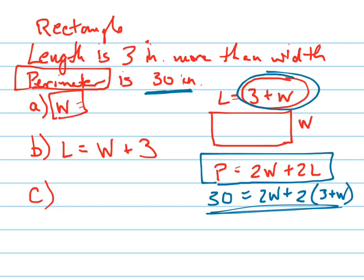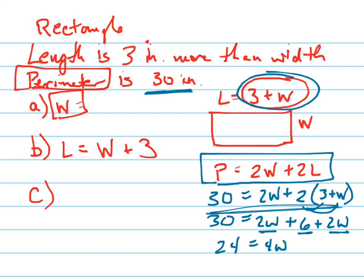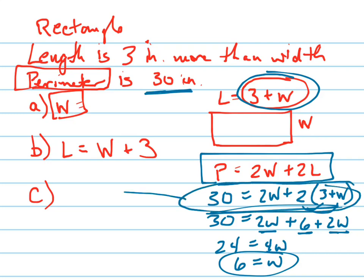Then I can use algebra to solve that. I distribute the 2 in, so that's 6 plus 2W plus 2W equals 30. Now add the W's together and subtract 6: 24 equals 4W, which means W equals 6. The equation we set up is the one they're asking you to write for Part C.